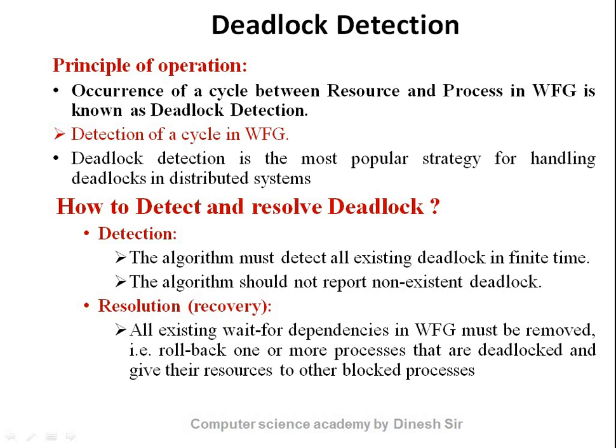The wait-for graph shows how processes access resources and how resources are utilized in the distributed system. This graph is known as the WFG — wait-for graph. The occurrence of a cycle between a resource and process in the distributed system is known as a deadlock.